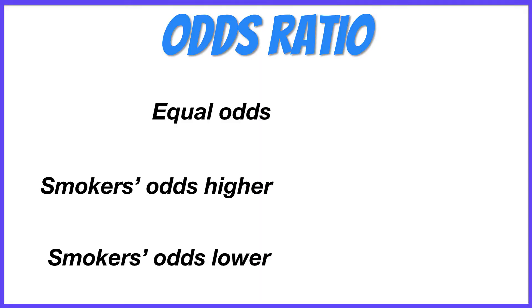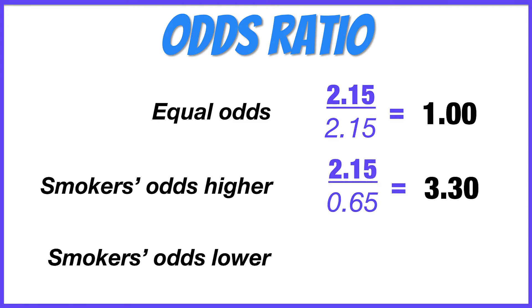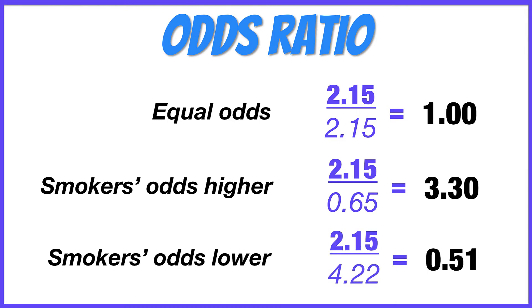So how do you interpret these odds ratios? If the odds of experiencing hematomas are the same for smokers and non-smokers, then the odds ratio will equal 1. But if the odds of experiencing hematomas is greater for smokers versus non-smokers, then the odds ratio will be greater than 1. And alternatively, if experiencing hematomas is less likely for smokers than non-smokers, the odds ratio will be less than 1.